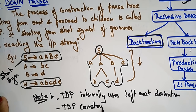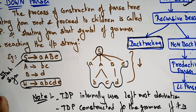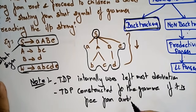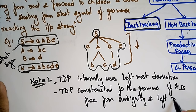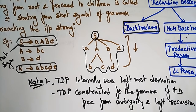The top-down parser is constructed for a grammar only if it is free from ambiguity and free from left recursion. When that grammar is free from ambiguity and left recursion, only then can the top-down parser be constructed. If there is no ambiguity in the tree, we can construct the top-down parser. The average time complexity here is O(n²).